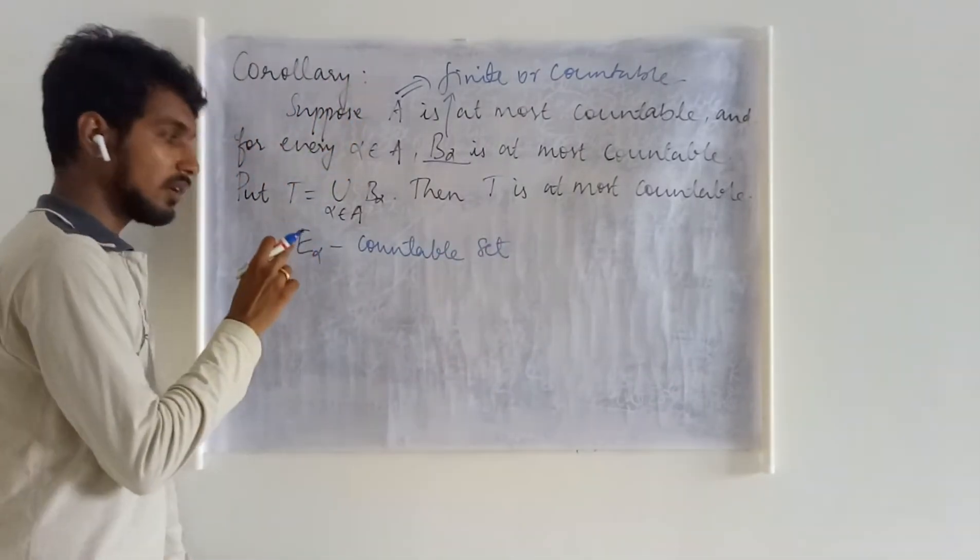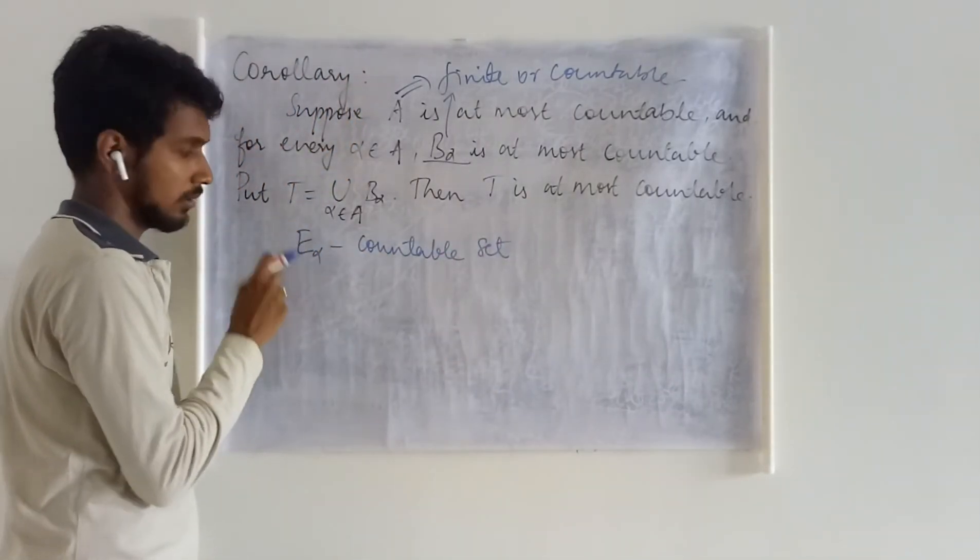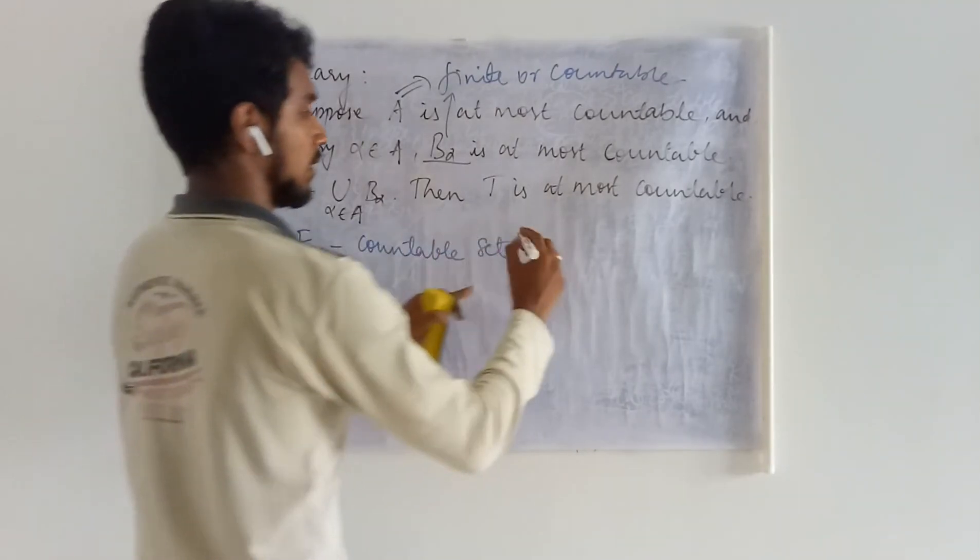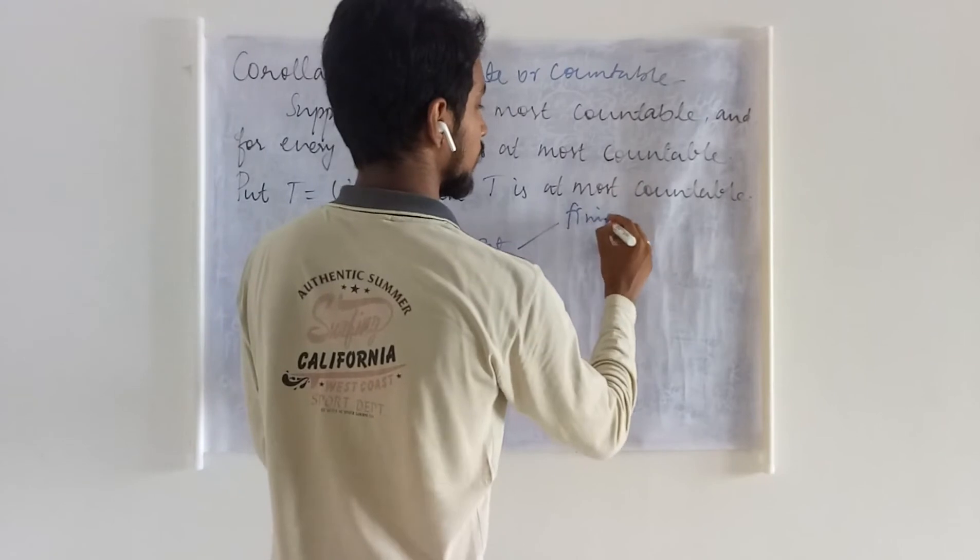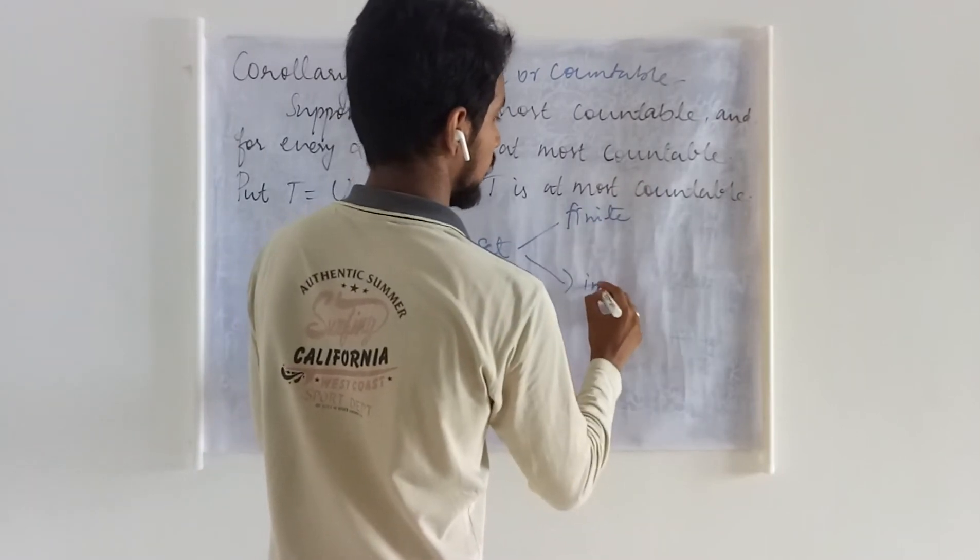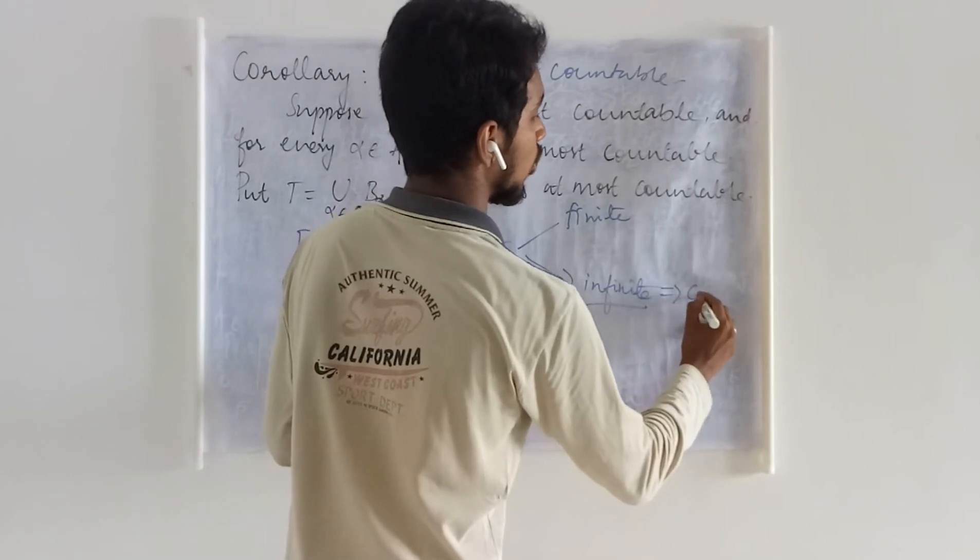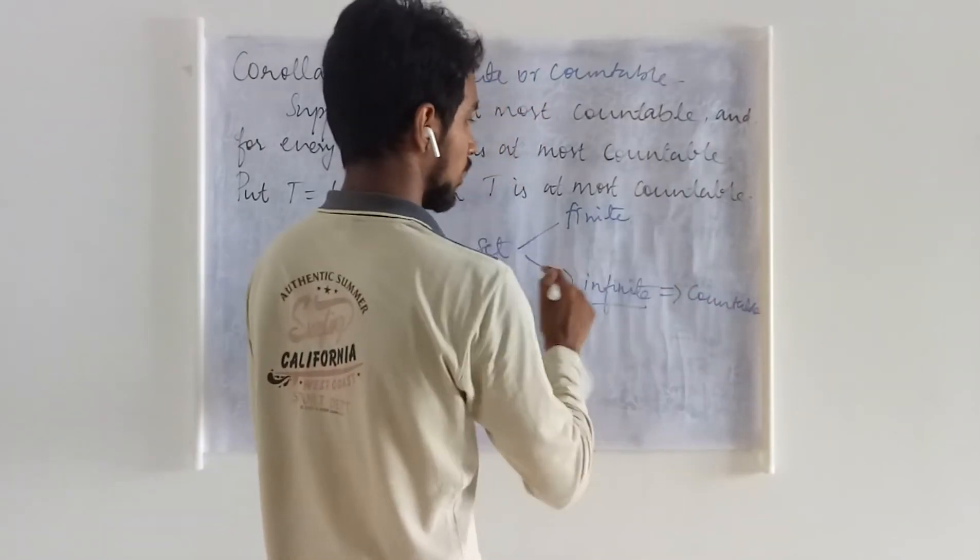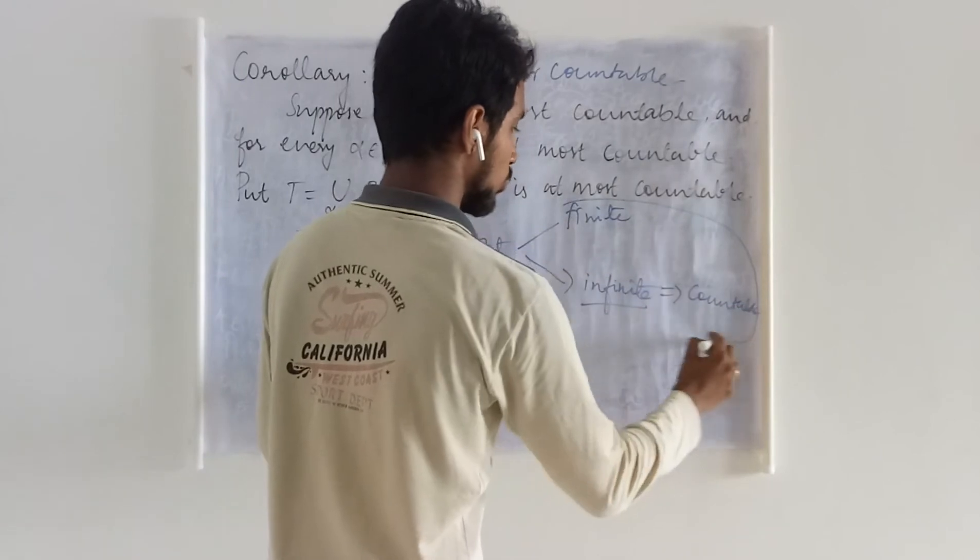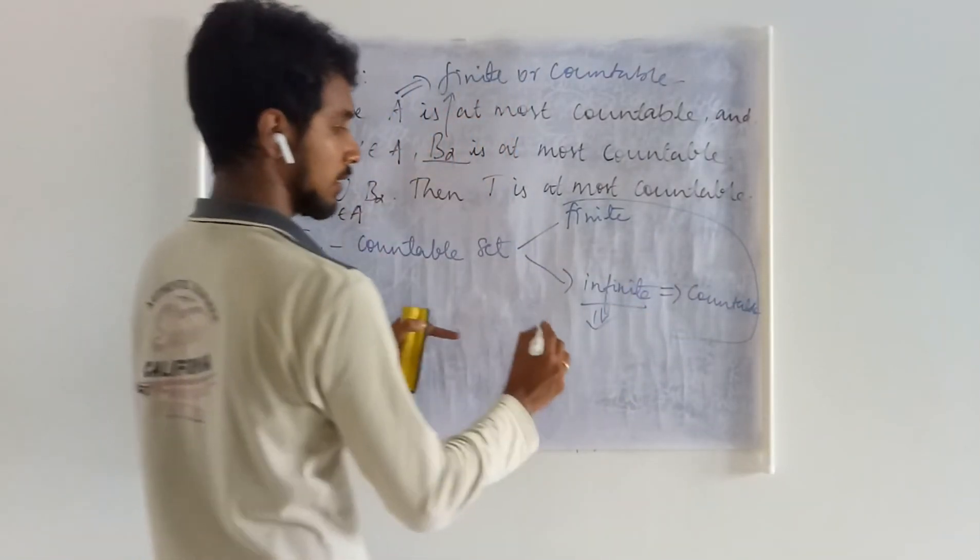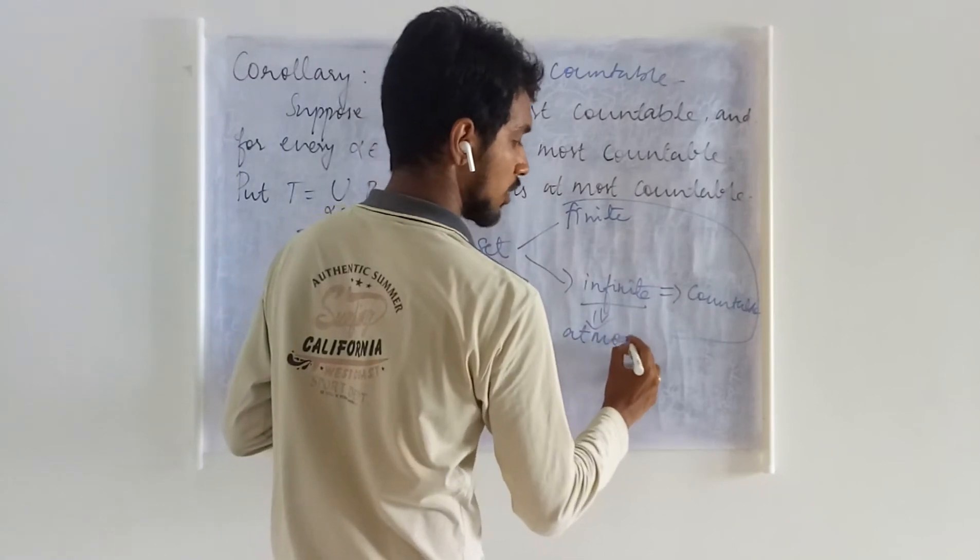We have seen that an infinite subset of a countable set—if you are able to take a subset of this set, it can be either finite or infinite. If it is an infinite subset, it turns to be countable. Combining these two, if you take a subset of a countable set, that is going to be at most countable.